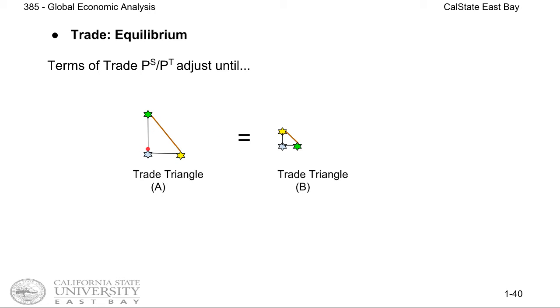Similar story applies to textiles. So basically, the terms of trade or the price ratio is going to adjust up and downward until the trade triangle is equal to the trade triangle in B.